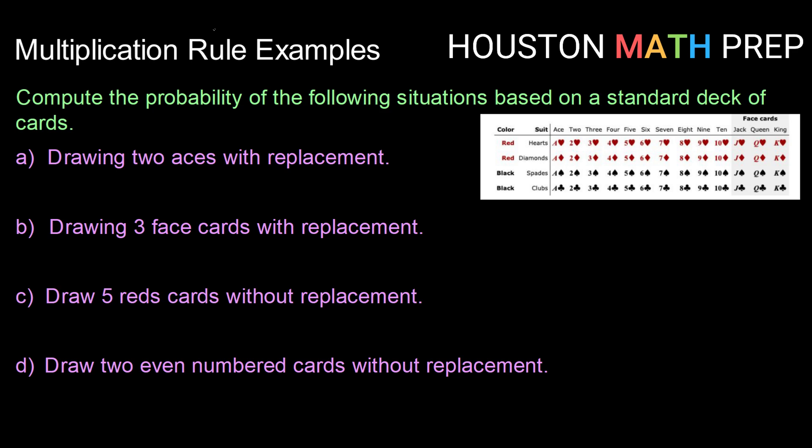In the first question we're looking at: what is the probability of drawing two aces with replacement? With replacement means we're going to draw one card, record what it is, put it back in the deck, and draw another card. That makes our two draws independent, so we can use the independent version of the multiplication rule.